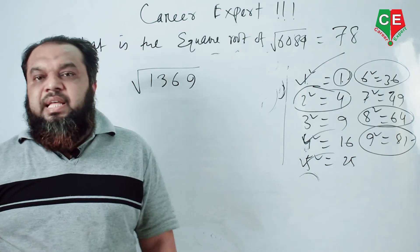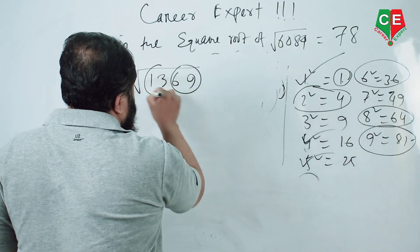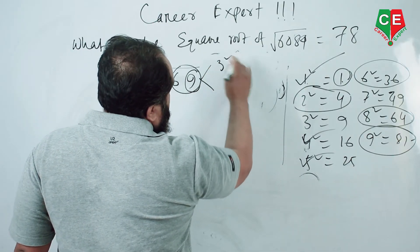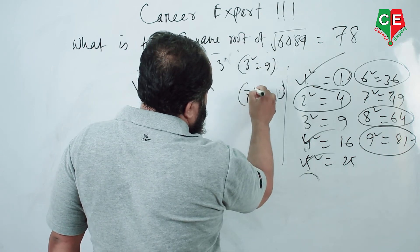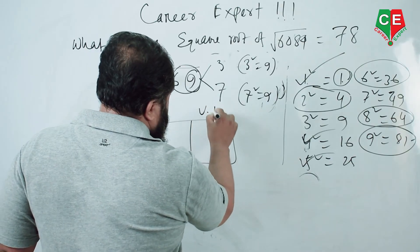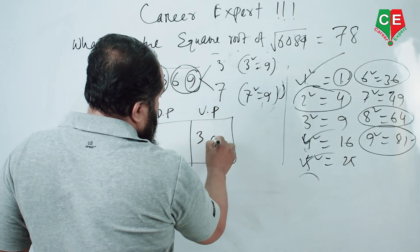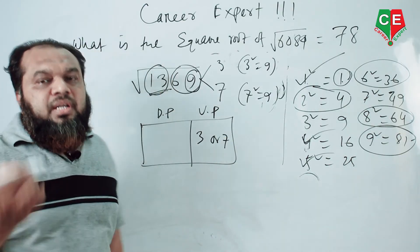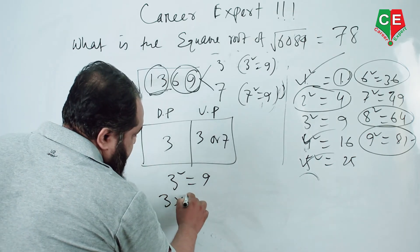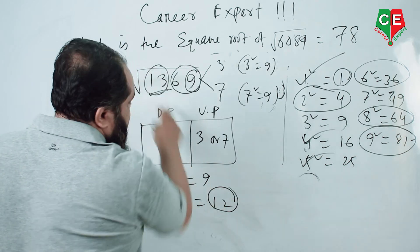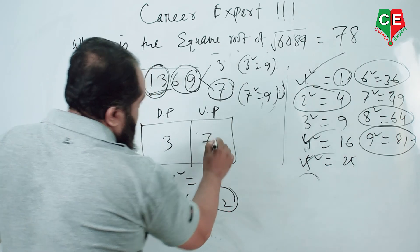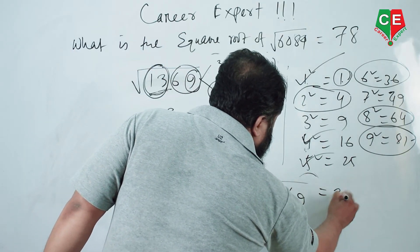One more: square root of 1369. Step one, make two pairs: 13 and 69. The unit place is 9. Now 3 squared equals 9 and 7 squared equals 49, so the unit place is either 3 or 7. Then look at 13 — the square term below 13 is 3 squared equals 9. So the tens digit is 3. Check: 3 × 4 = 12, which is less than 13. Since 13 is greater than 12, we take the bigger number, which is 7. The square root of 1369 equals 37.